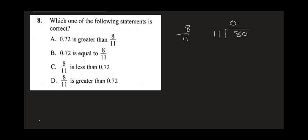11 into 80 gives you 7, since 11 times 7 is 77. You bring down 3. 11 cannot go into 3, so add a zero. 11 into 30 gives you 2, since 11 times 2 is 22, leaving 8. Then 11 into 8 cannot go — you put 0, 11 into 80 gives 7, and 11 times 7 is 77, and if you continue it repeats.